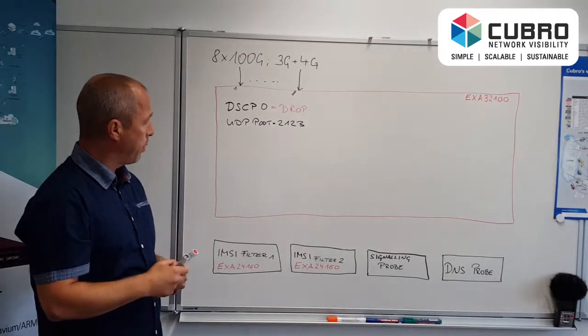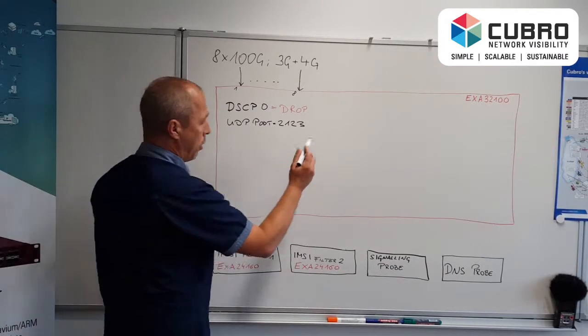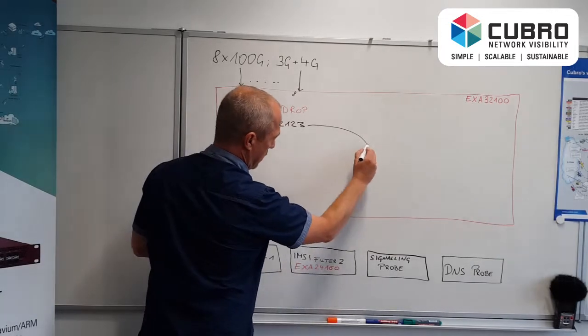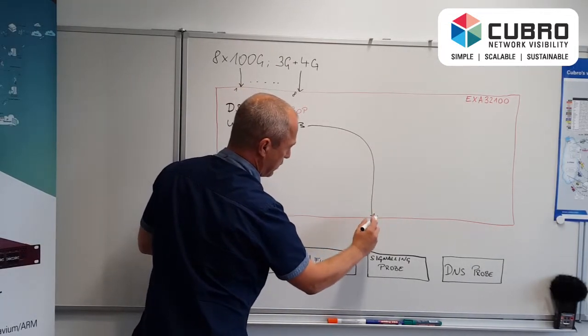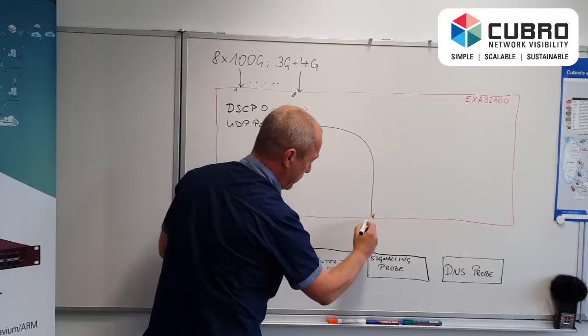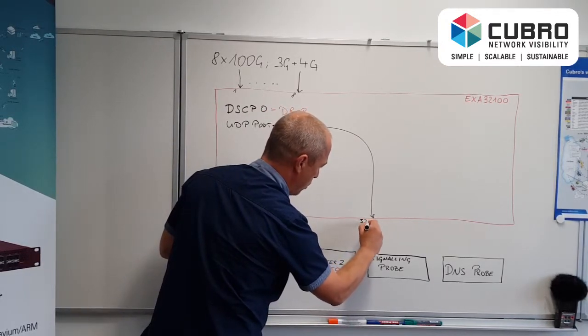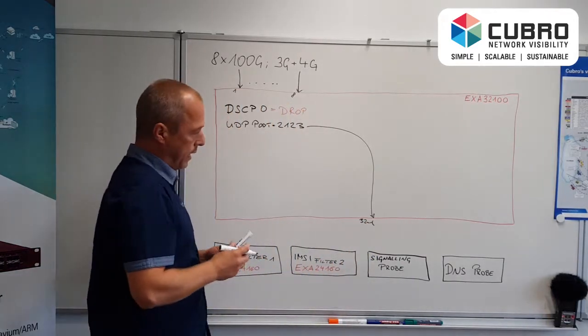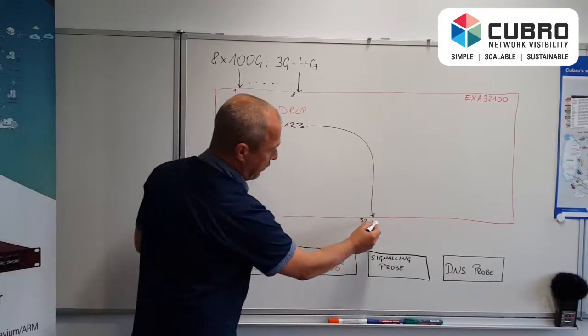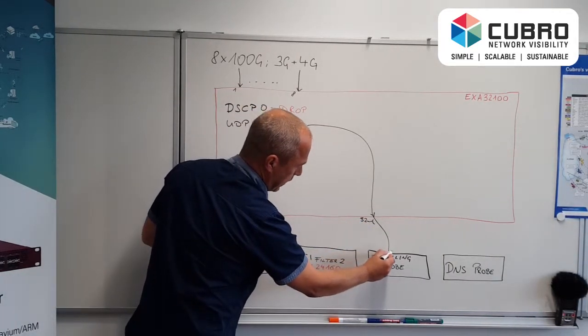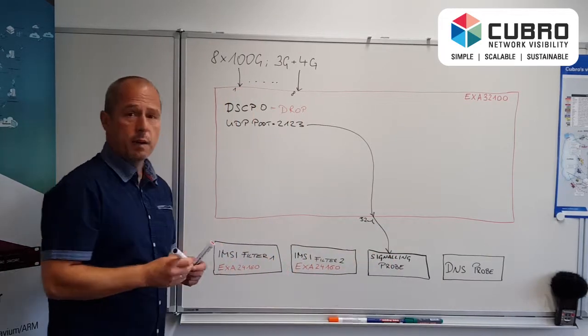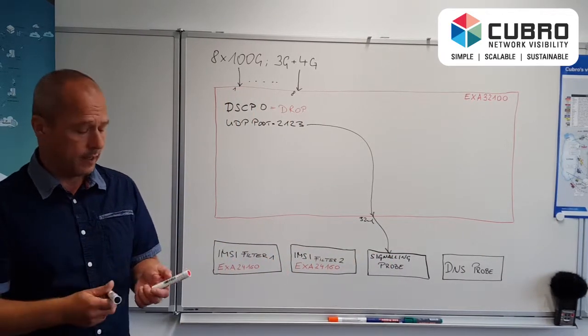And how we process that? We feed this now to one output. When we feed it here, let's consider this is a 10G port called 32-1. And that traffic we can directly feed to our signaling probe. That signaling probe will analyze all the signaling in the network.